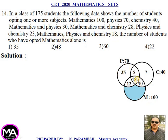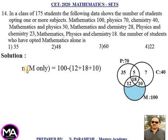Mathematics and Physics only (excluding all three): 30 − 18 = 12. Mathematics and Chemistry only: 28 − 18 = 10. Physics and Chemistry only: 23 − 18 = 5. Therefore, number of Mathematics only = 100 − (12 + 18 + 10) = 100 − 40 = 60. That is option third.